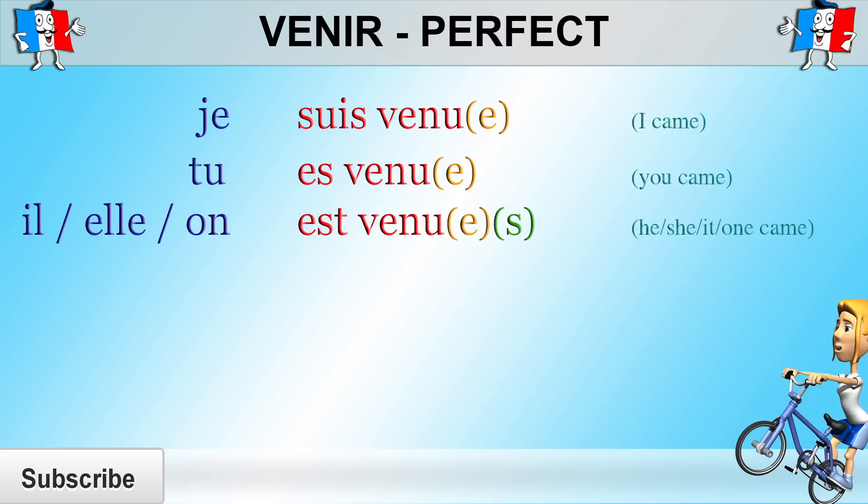Remember though that these do not affect pronunciation. So whether you add the e or the s or nothing at all, venu is still pronounced venu. Nous sommes venu. Nous sommes venu.